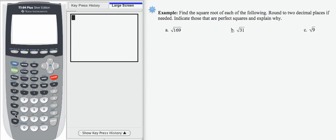In this example, we're asked to find the square root of each of the following numbers and round to two decimal places if needed. Indicate those that are perfect squares and explain why.